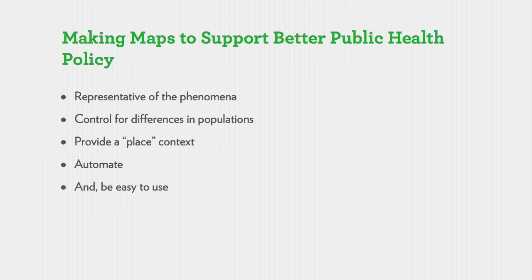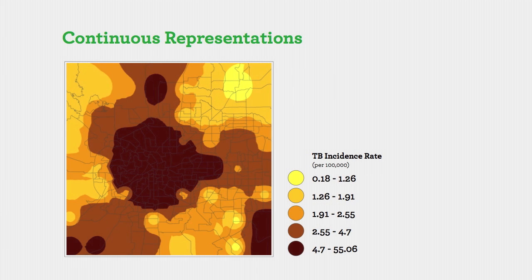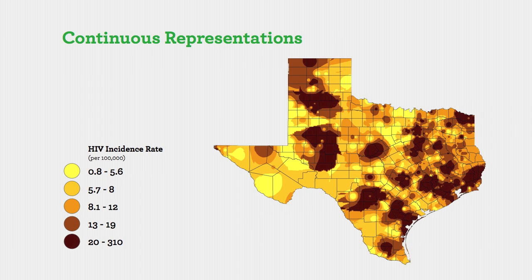Based on that notion, I have some recommendations on what I think are good maps, at least as far as public health policy is concerned. The first idea is that you want to make a map that's representative of the phenomena. Here we're looking at the same TB data, except with a continuous representation that I think is more representative of the process itself and not so much based on arbitrary administrative boundaries, giving you a better view of the disease burden.